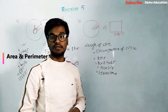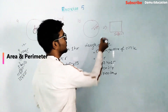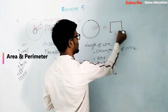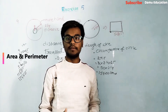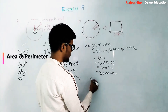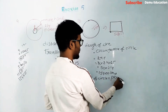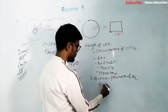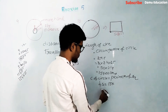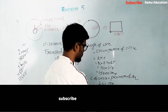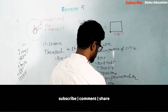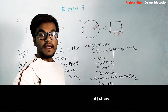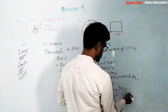Since the wire is bent into a square shape, the circumference of the circle equals the perimeter of the square. The perimeter of a square is 4 into side, so 4s = 157, which means s = 157 divided by 4. Dividing gives us 39.2 centimeters. So the side of the square is 39.2 centimeters.